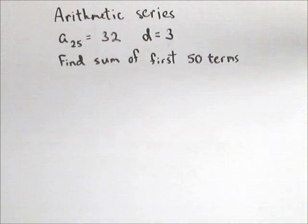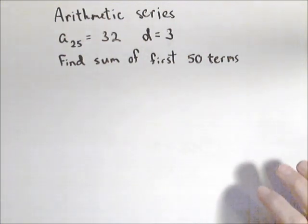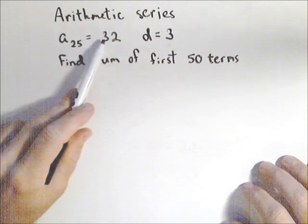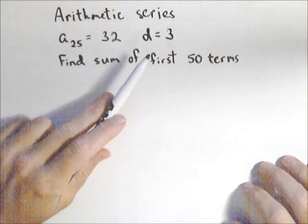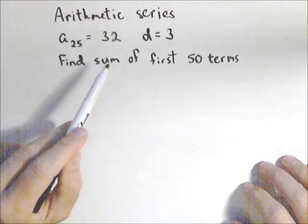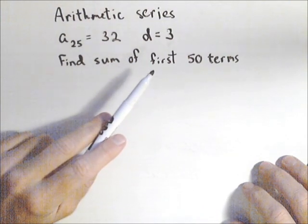In this video, we're gonna look at how to sum up an arithmetic series given just a little bit of information. In this case, we're given the 25th term, which is 32, and the common difference, which is three. So we want to find the sum of the first 50 terms.